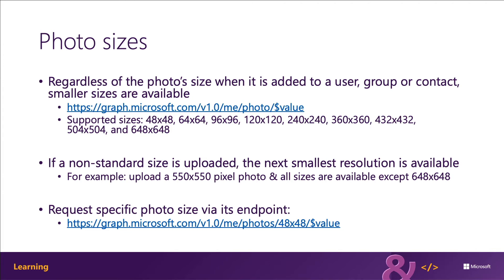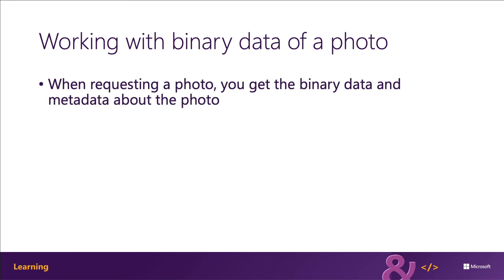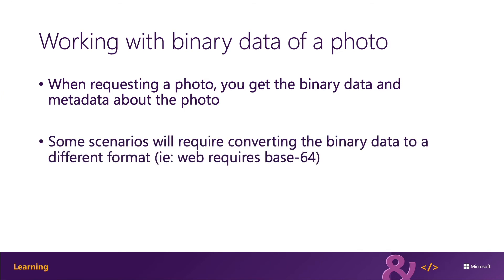The object returned by Microsoft Graph contains the metadata for the profile photo. The following JSON contains the standard response returned by the Microsoft Graph photo/$value endpoint. When you use the photo/$value endpoint to get the binary data for a profile photo, you're going to need to convert the data into a Base64 string and add it as an email attachment. You can also save the binary stream to a local disk and save it as an image file.